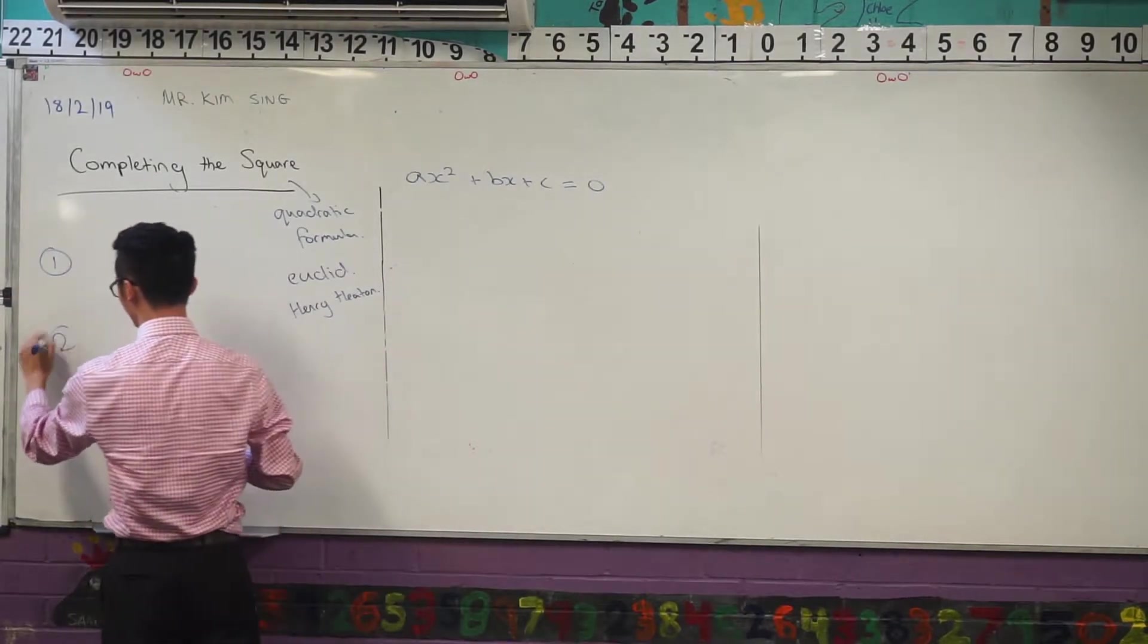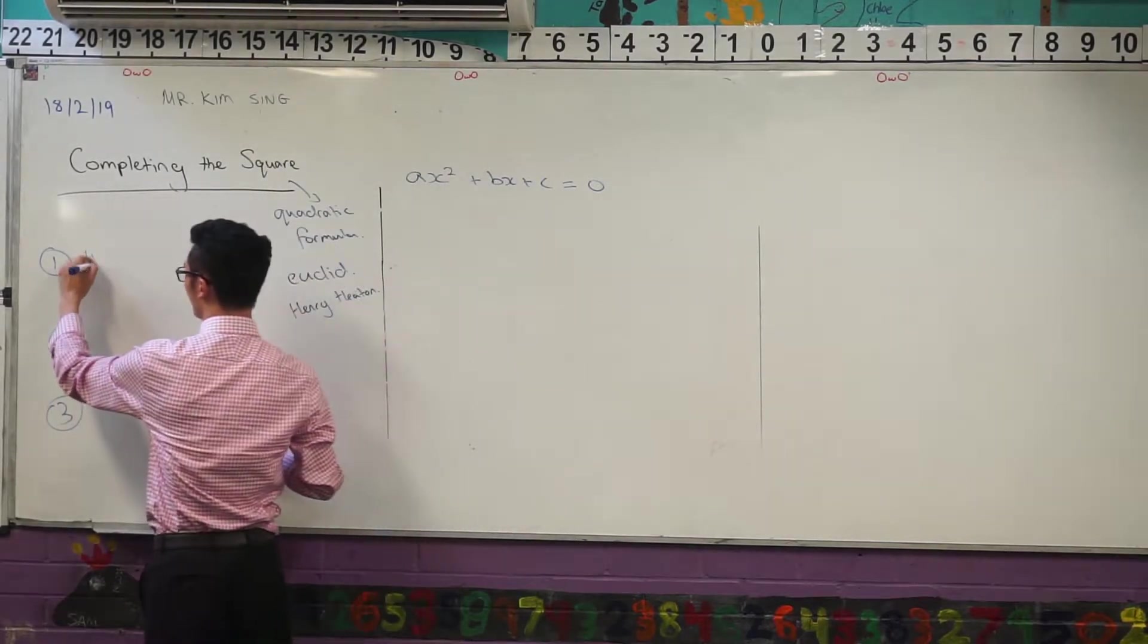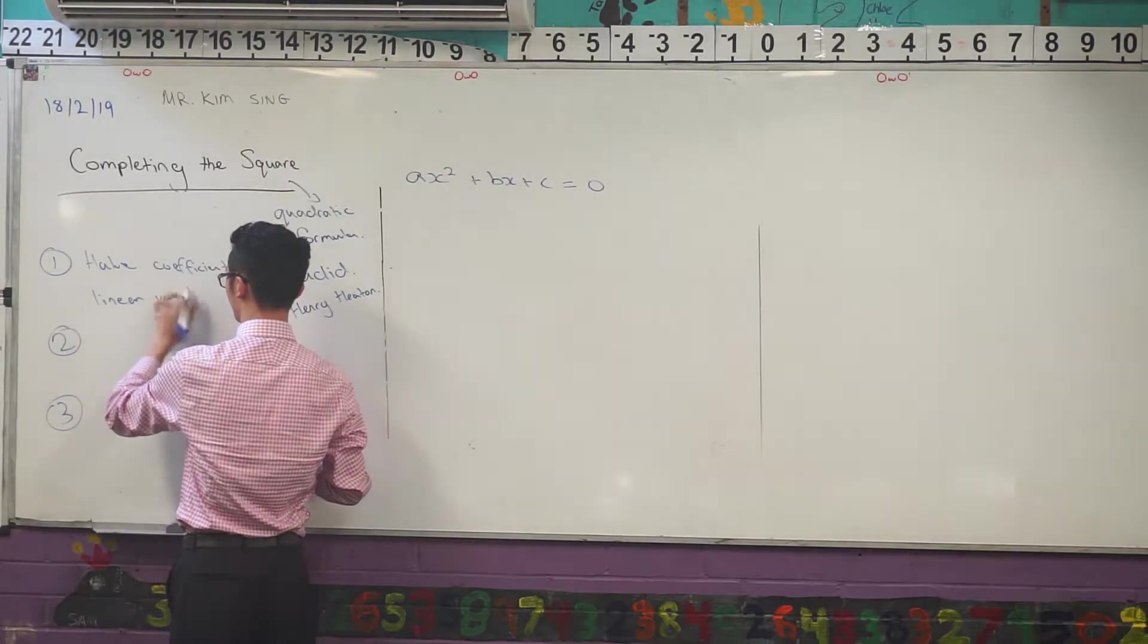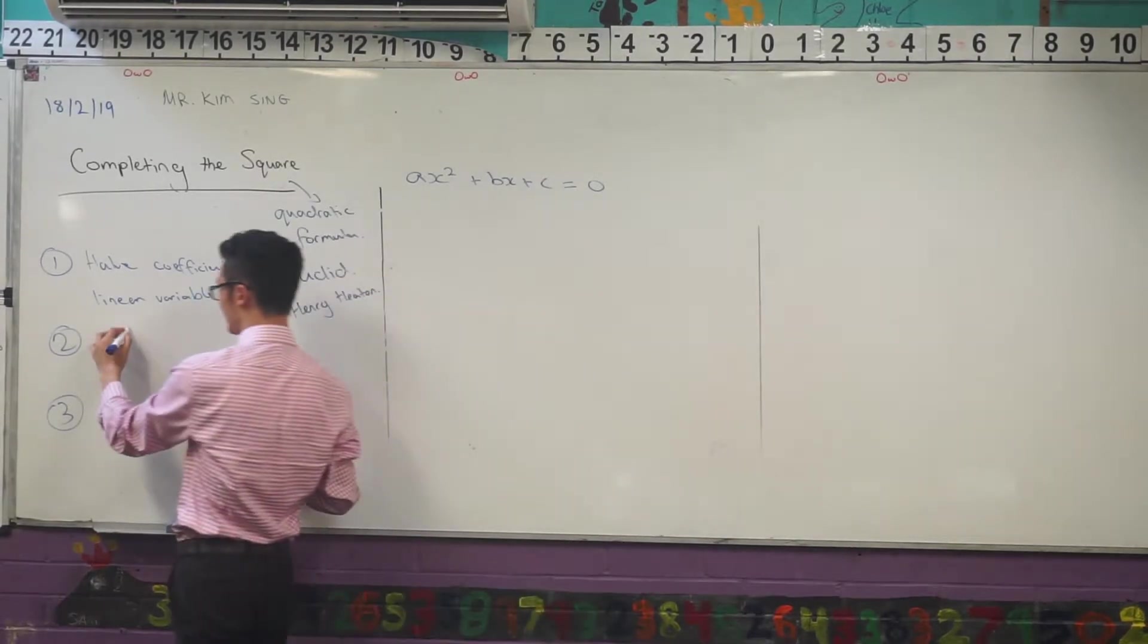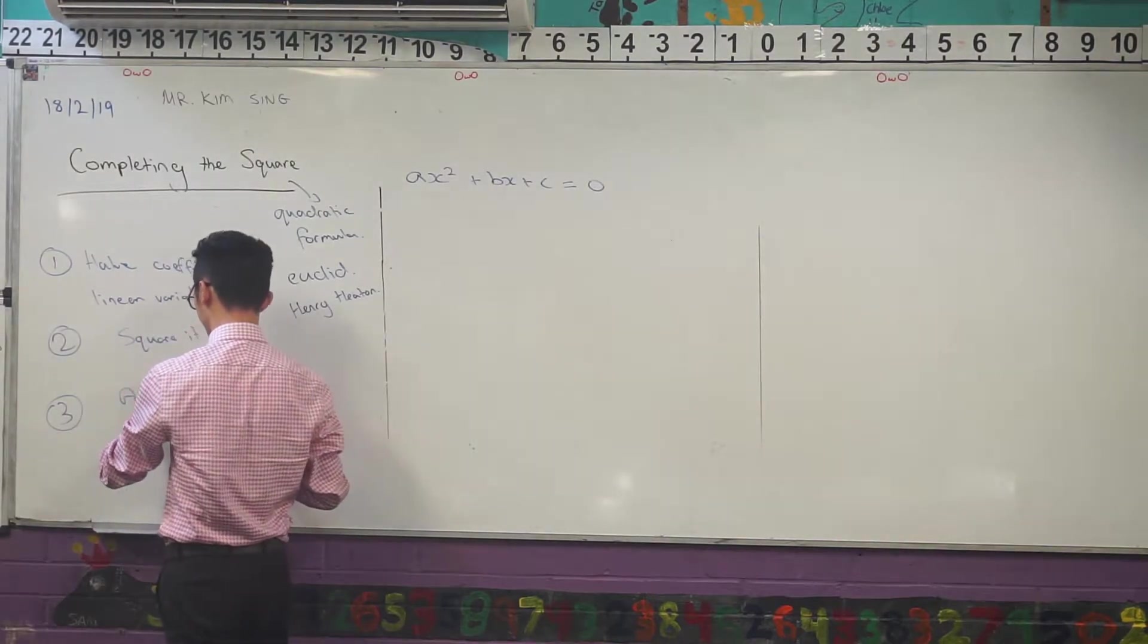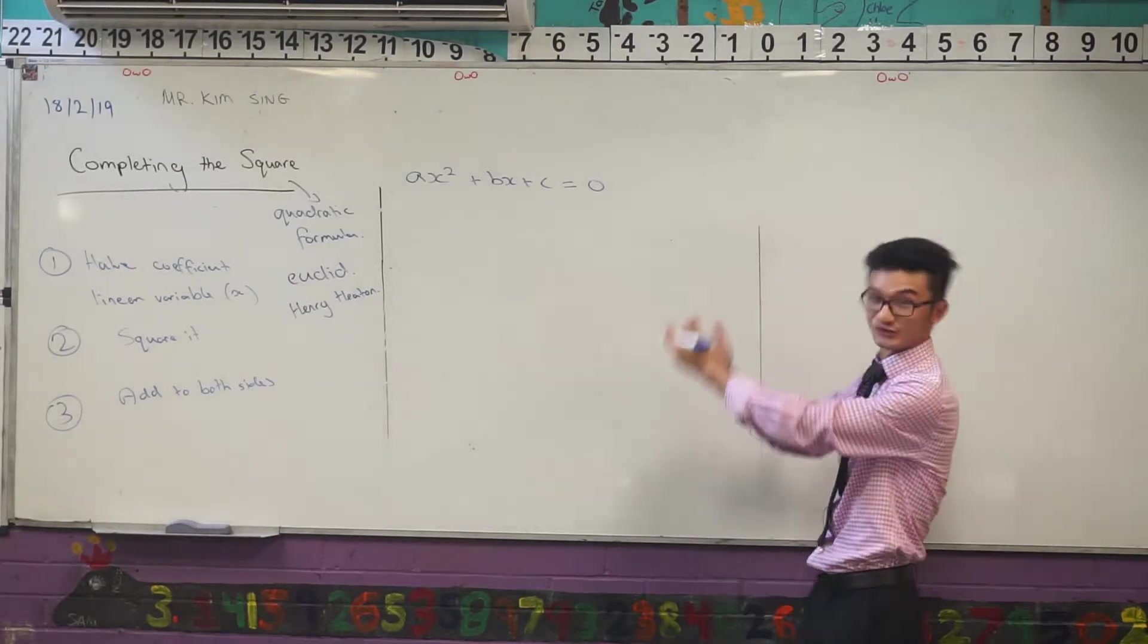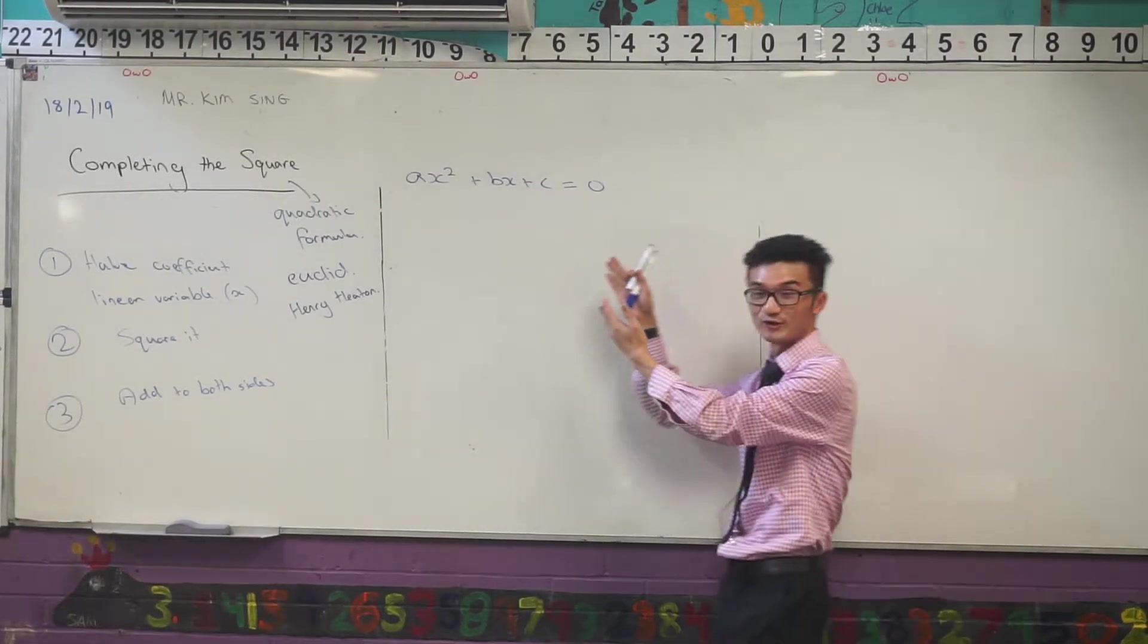And we're going to have to use our completing the square methods in order to do this. So remember our completing the square methods. We had really three steps that we need to take. We first need to halve the coefficient of the linear variable, and in this case that's represented by x. The next thing we need to do was take that and square it and then add it to both sides.